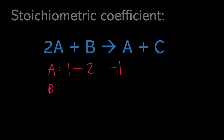For species B, on the product side the stoichiometric amount is 0 and on the reactant side it is 1, so we have a stoichiometric coefficient of negative 1. For species C, on the product side we have a stoichiometric amount of 1 and on the reactant side 0, yielding a stoichiometric coefficient of 1. As a result, the stoichiometric coefficient for reactants tends to be negative and for product species tends to be positive.